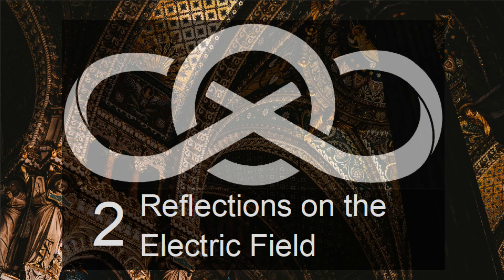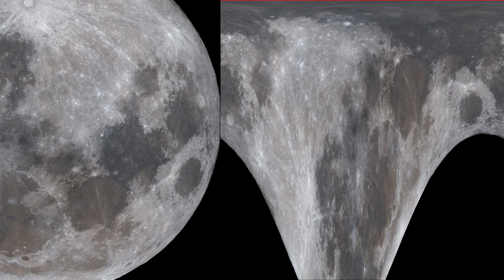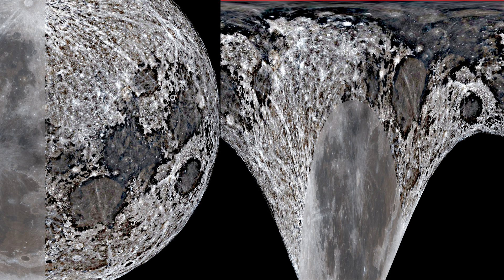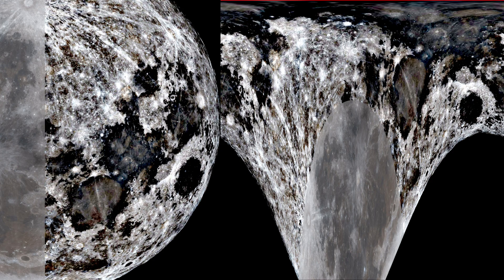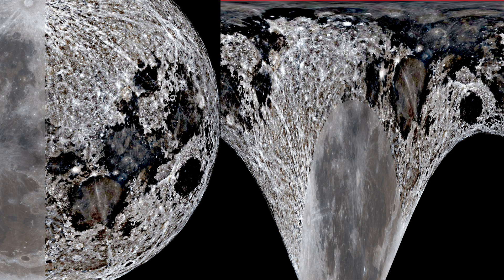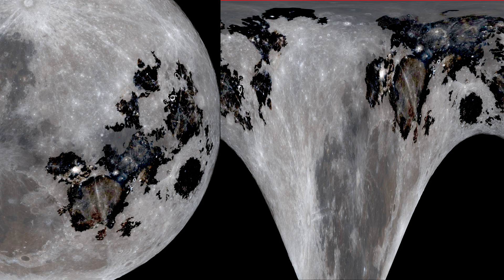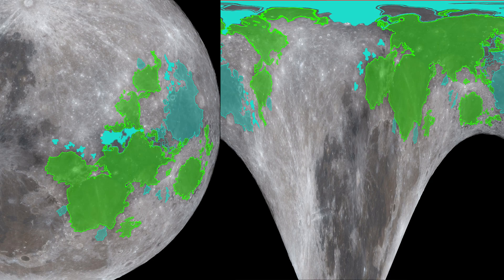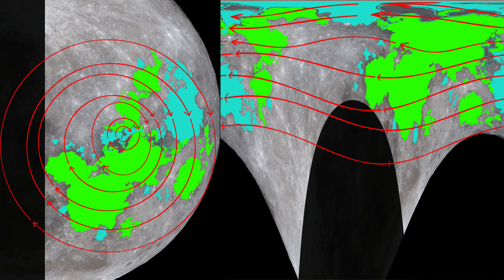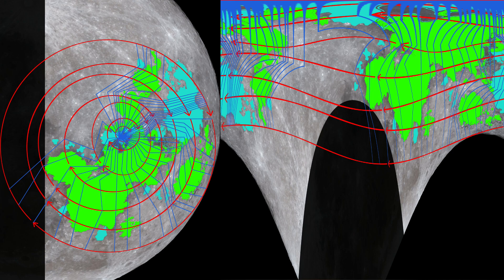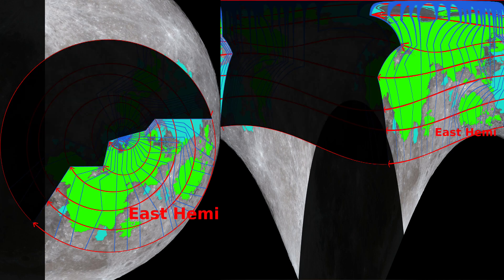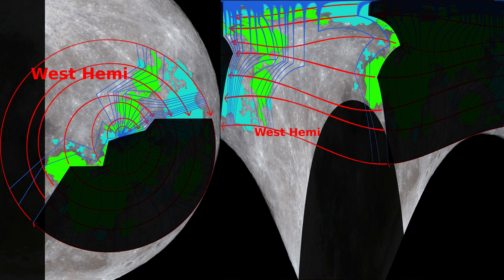Welcome to Selenetical Physics, Volume 2, Reflections on the Electric Field. Having established that the only object with discernible features visible from every location on the surface of the earth bears every location on the surface of the earth as those discernible features, we'll now assemble the building blocks as to how the larger scale structure of our physical realm correlates with the moon projection, beginning with a primer on the electric field.